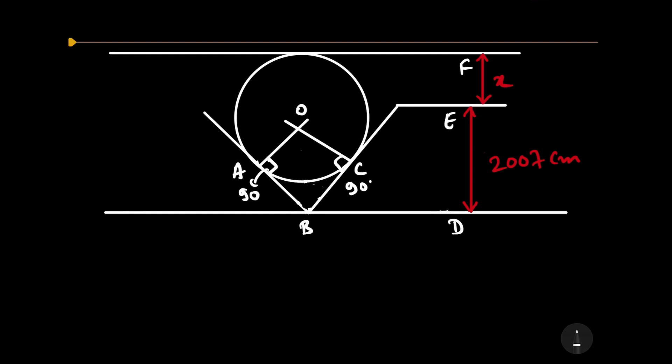Now, quadrilateral ABCO is a cyclic quadrilateral. Since a cyclic quadrilateral is a four sided shape that can be inscribed in a circle and the sum of opposite vertices is 180 degrees, and clearly you can see that angle A plus angle C is 180 degrees. Since angle A is 90 degrees and angle C is also 90 degrees, 90 plus 90 equals 180.